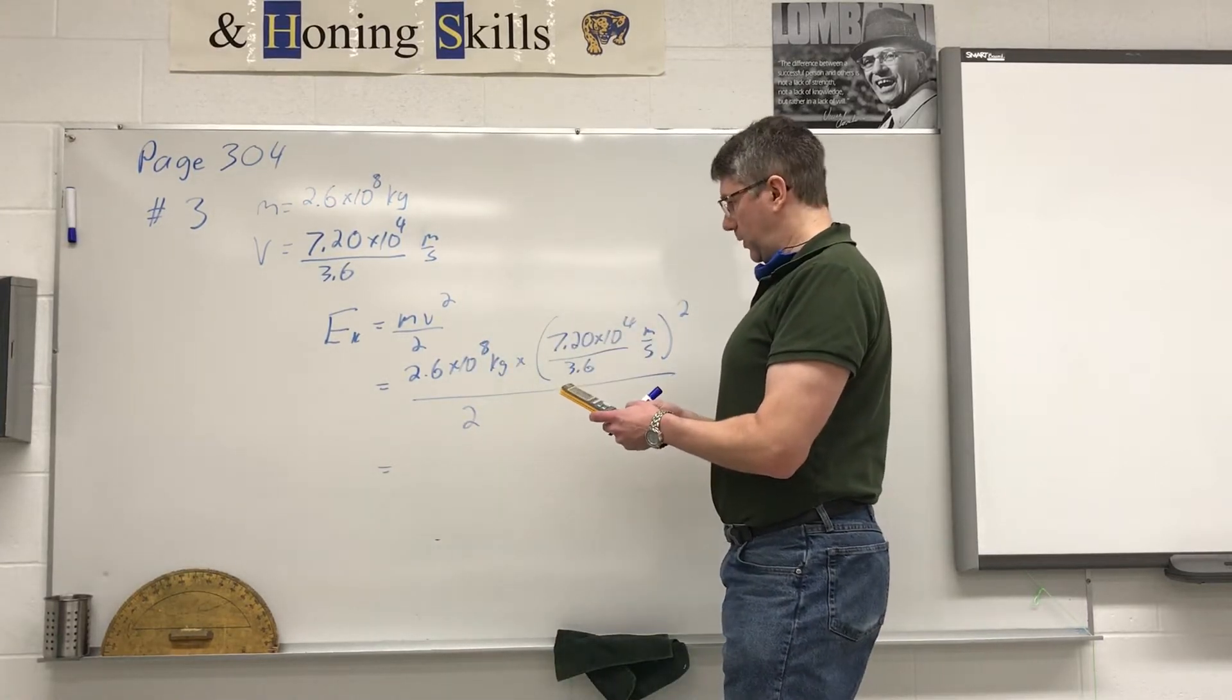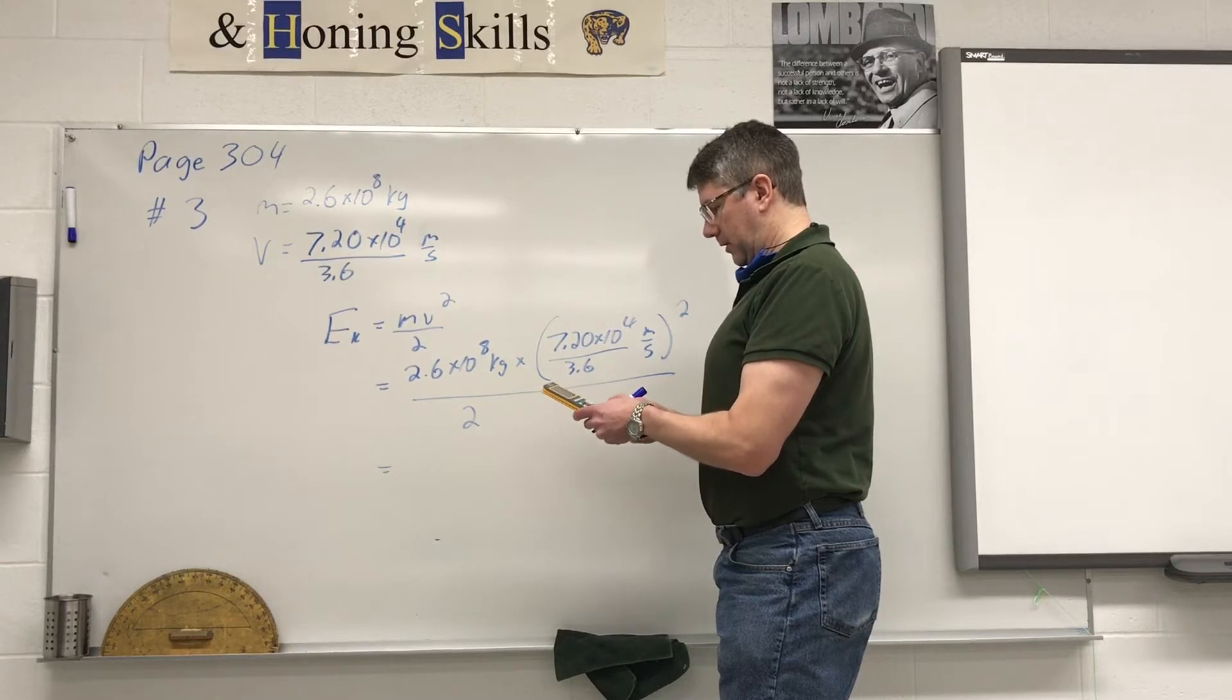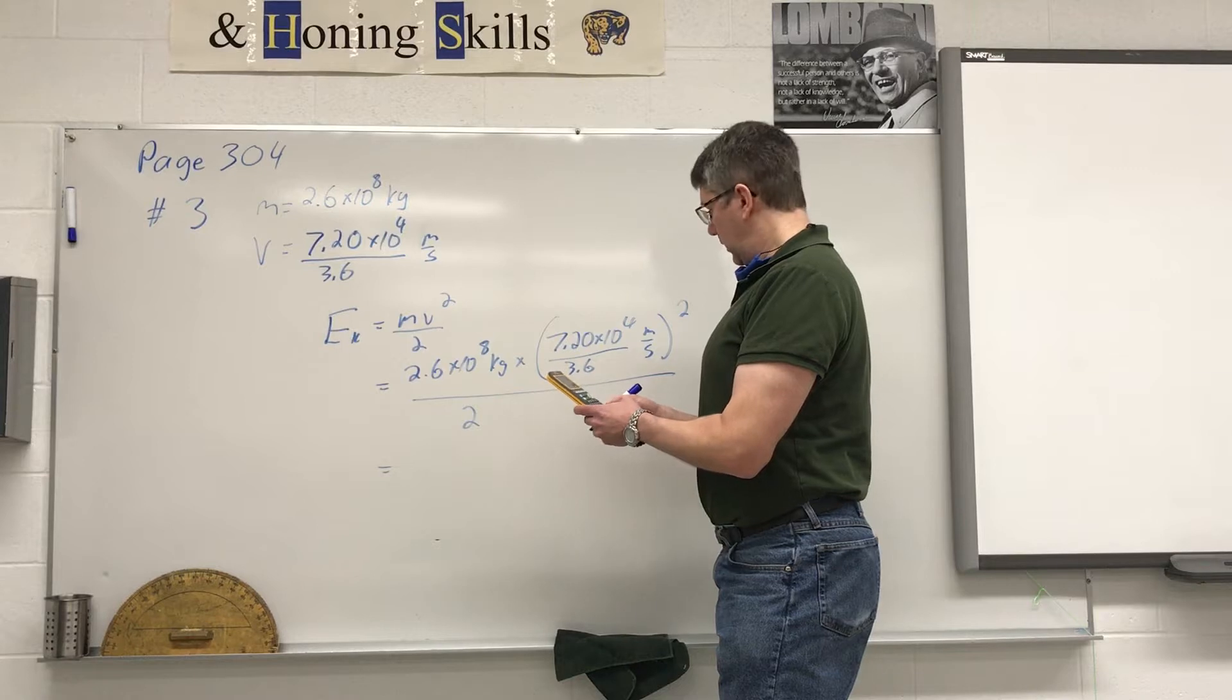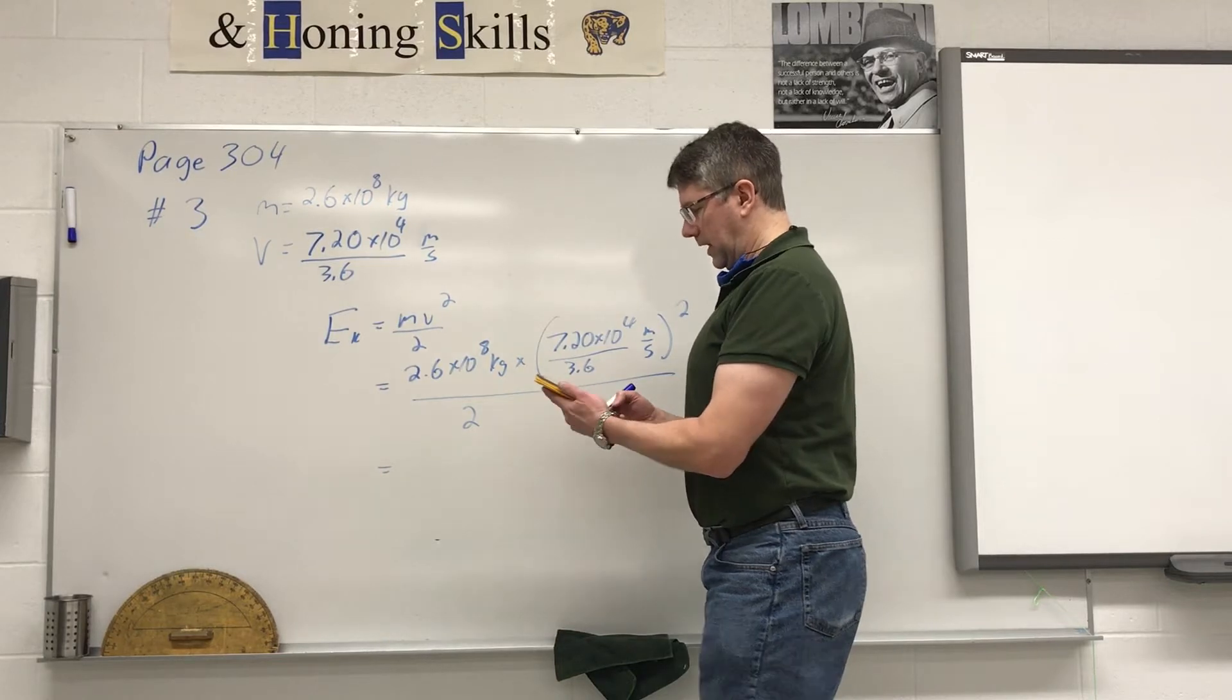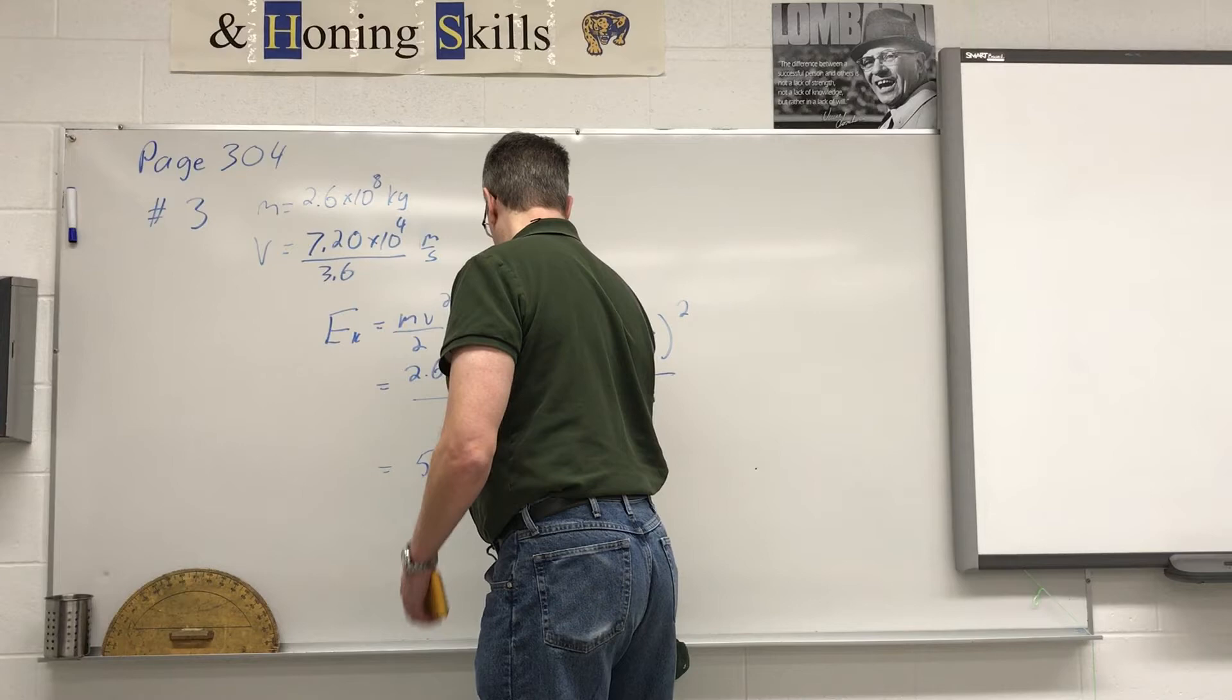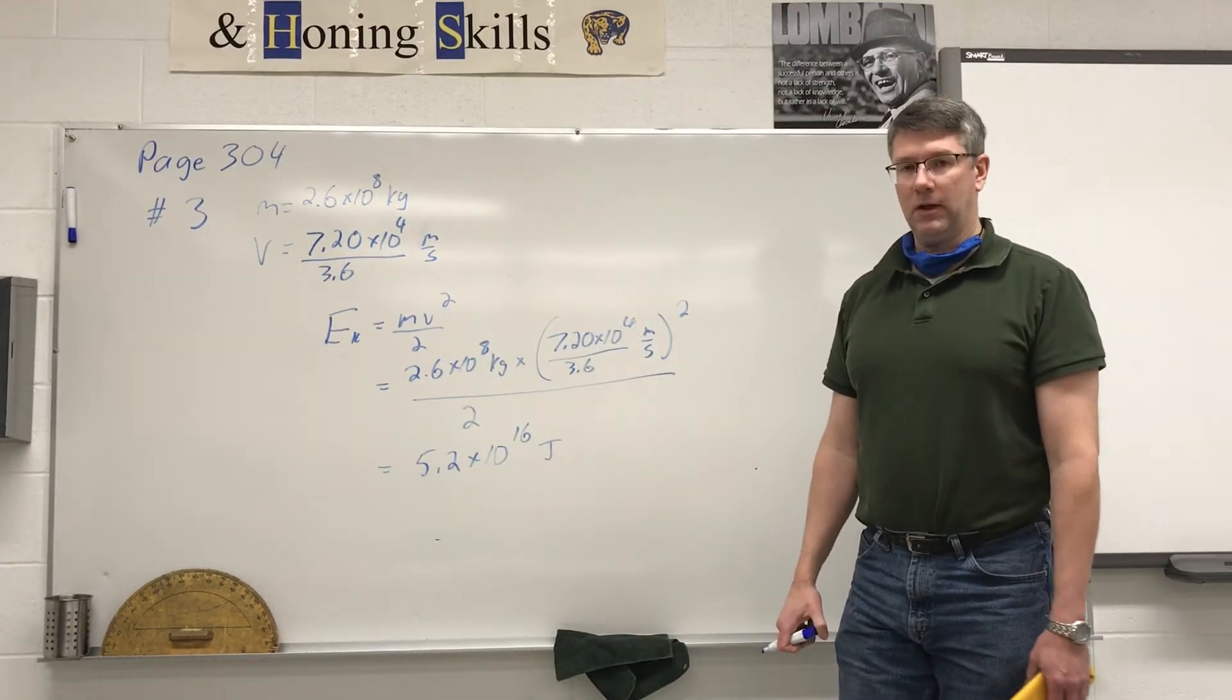So on the calculator, 2.6 times 10 to the power of 8 times bracket 7.20 times 10 to the power of 4 divided by 3.6 close bracket squared divided by 2 gives us 5.2 times 10 to the power of 16 joules. As we can see, that's a phenomenal amount of energy.